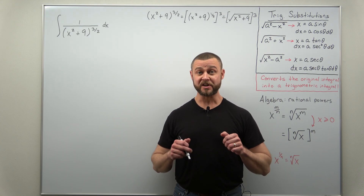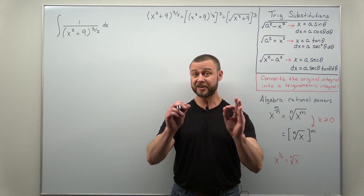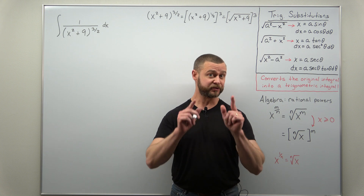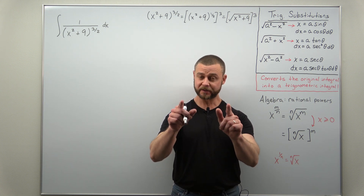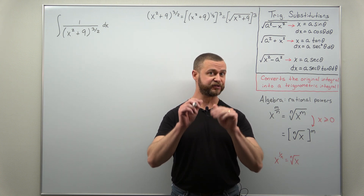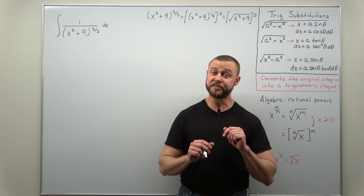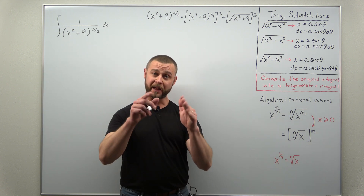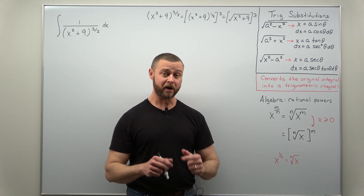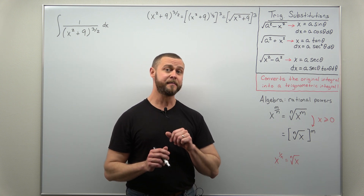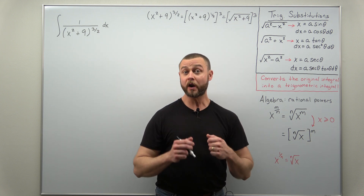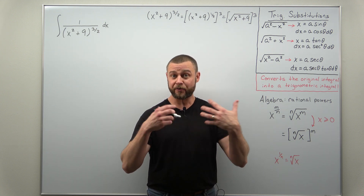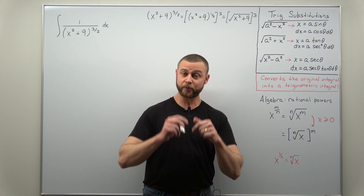Greetings fellow mathematicians! This is a standard trigonometric substitution problem that many Calc 2 students struggle with, so we're going to take our time and go through it at a slow pace. This is difficult primarily for algebra reasons — likely your algebra course was a while ago and you forgot a lot of the fundamentals. One difficulty students encounter is recognizing that there is even a radical or square root at all.